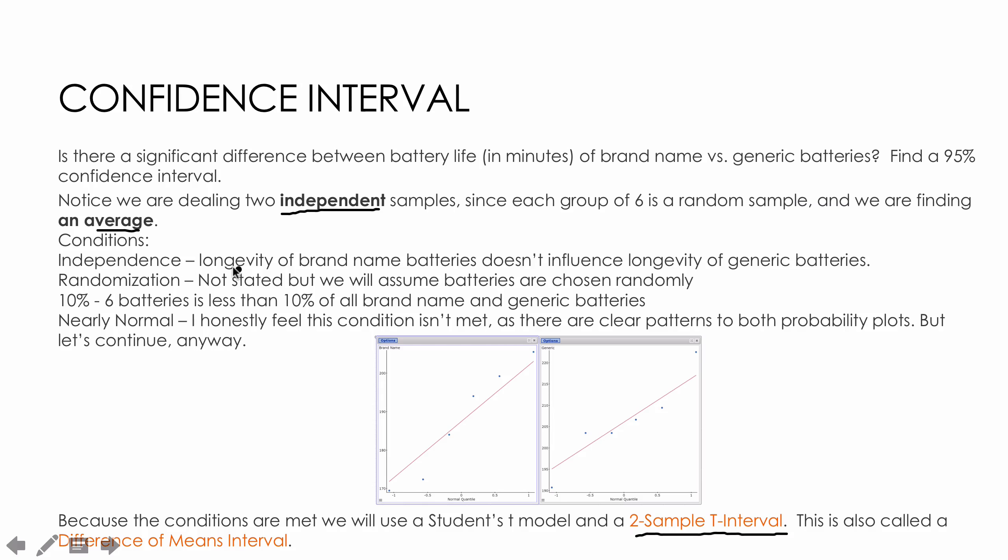I've checked the conditions here. I will point this one out to you: the nearly normal condition. I chose to create a QQ plot for each set of values. When I did that, I feel like there is a pretty strong pattern that it's not really fitting that normal model or T model very well. If it were me, I probably would not continue with this. But for the sake of practice, we're going to continue anyway.